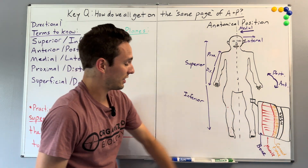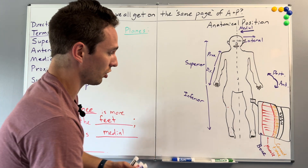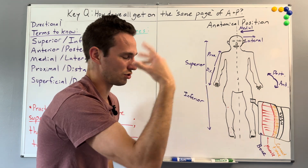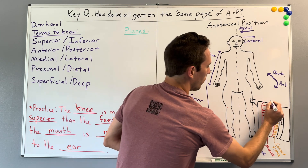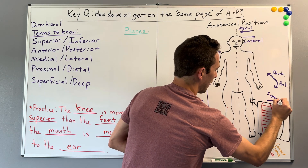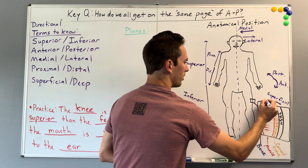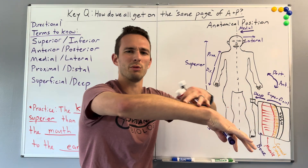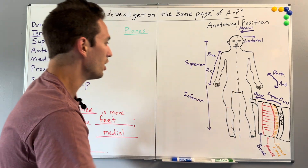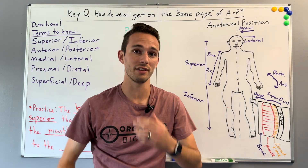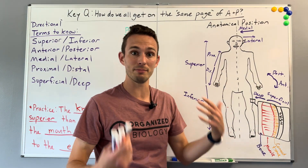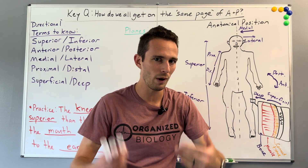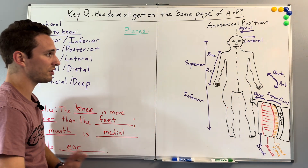You probably know a person that's very superficial — they're very much towards the outside. Whereas deep means getting further inward. All of these terms are very important when referencing where certain things are, especially if somebody's experiencing pain. They'd say it's a little more proximal to the elbow — it's an easy way to describe where something is, and it's consistent across every single human body.